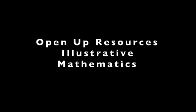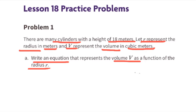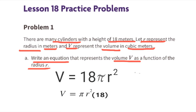Eighth grade Open Up Resources Illustrative Mathematics, unit 5, lesson 18, scaling two dimensions. Problem number one: there are many cylinders with a height of 18 meters. Let r represent the radius in meters and v represent the volume in cubic meters. Part a: write an equation that represents the volume v as a function of the radius r. We start with the formula v equals pi times r squared times height. Since the height is 18 meters, we substitute h with 18, giving us v equals 18 pi r squared.